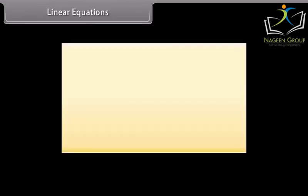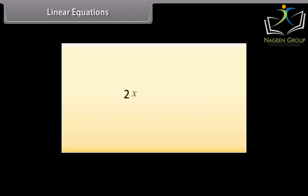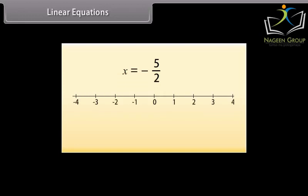A linear equation is an equality between two algebraic expressions involving an unknown value called the variable. The two sides of an equation are called the right-hand side (RHS) and left-hand side (LHS). Consider this equation — the solution, or root, of this equation is minus 5 by 2. Let's see where it represents on the number line.